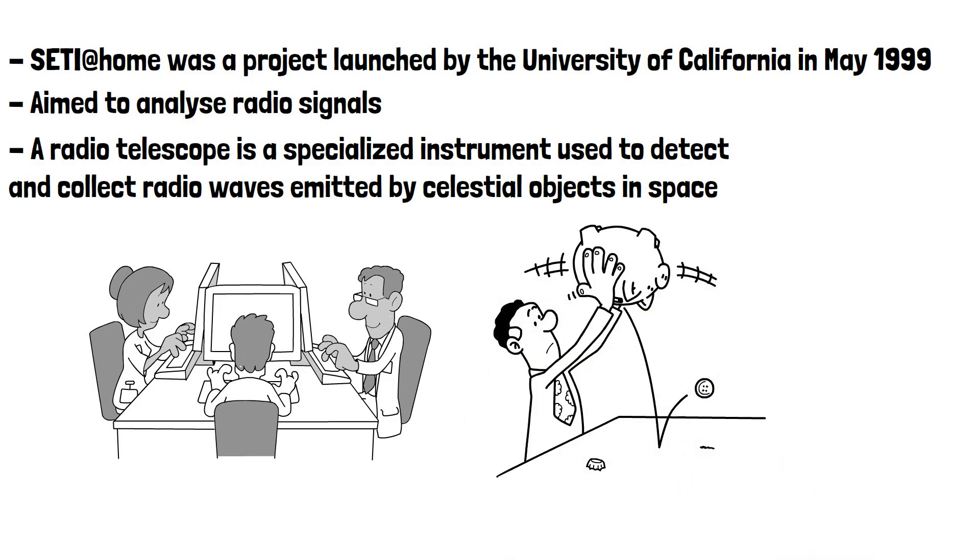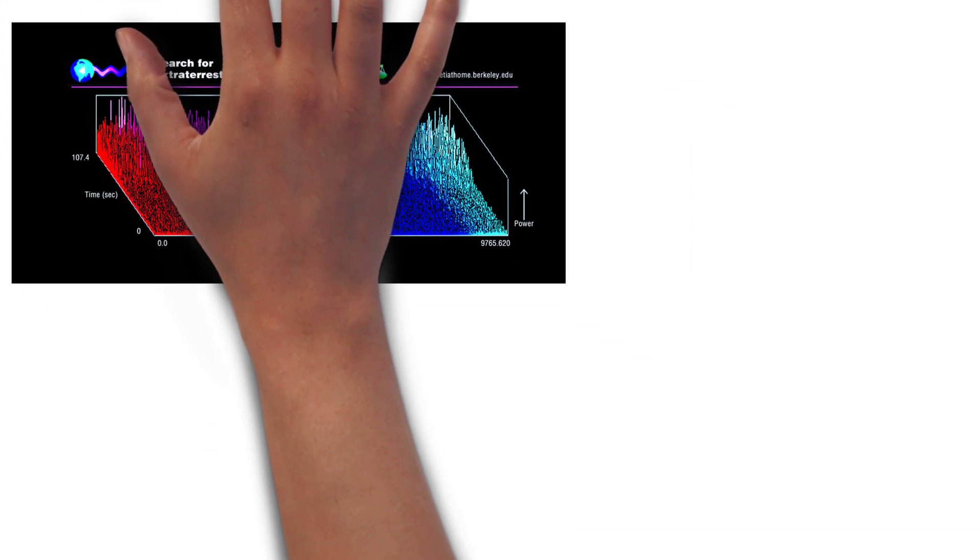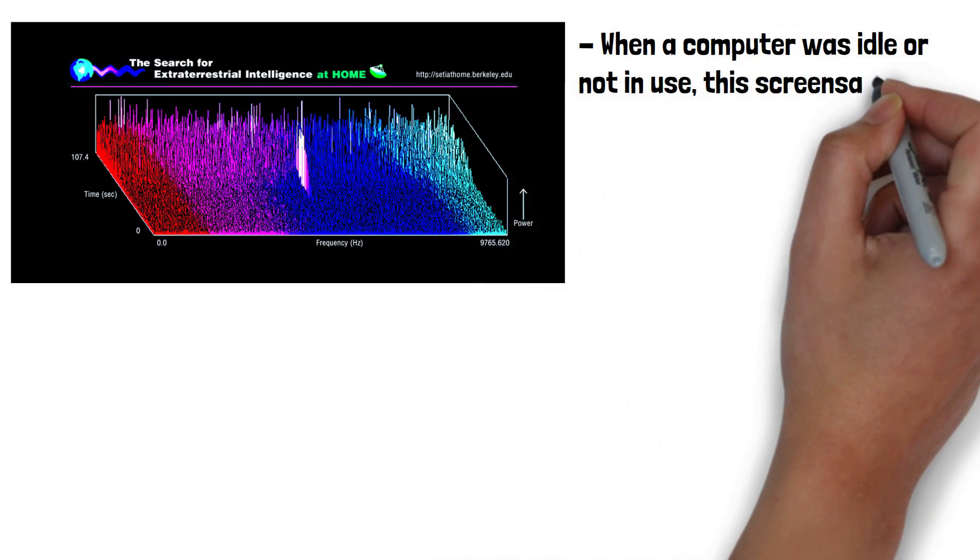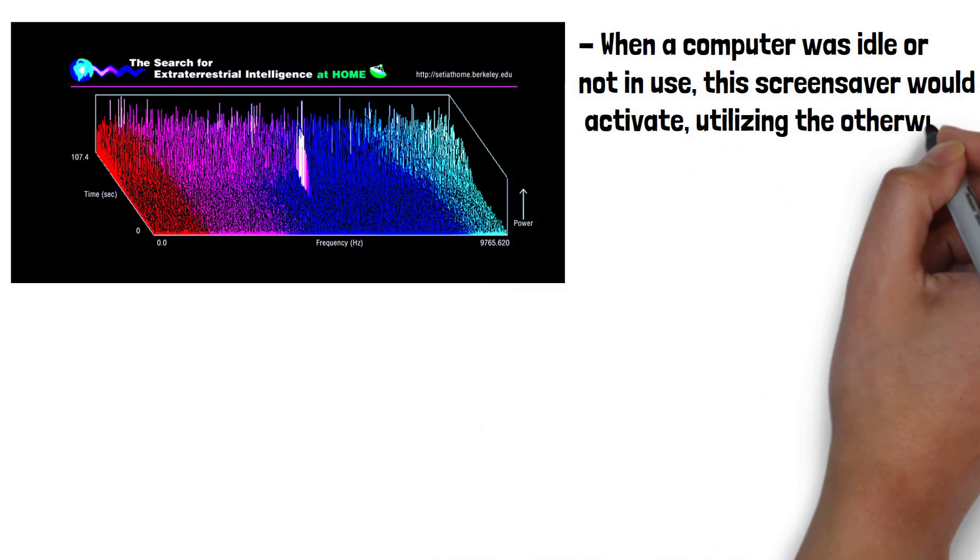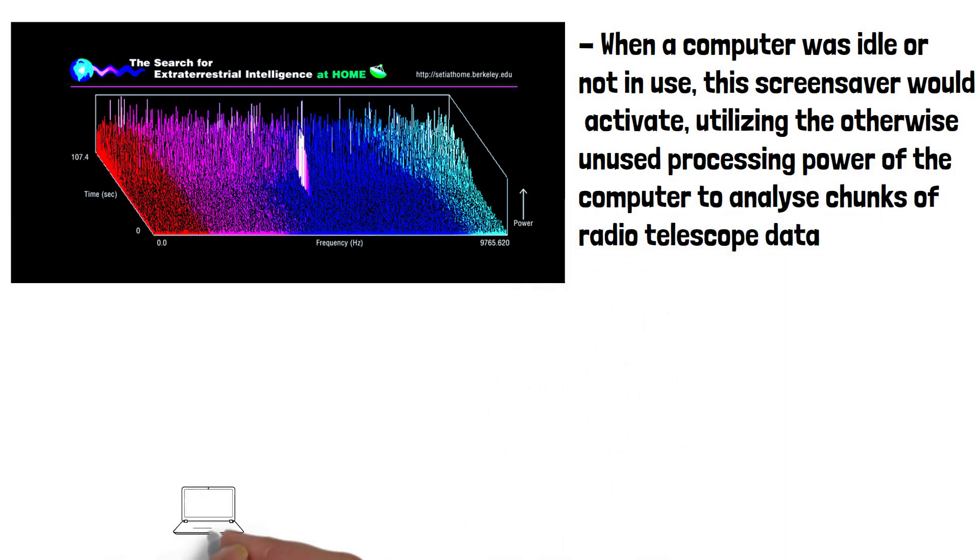That's where the SETI at home project comes in. SETI at home distributed a screensaver programme that volunteers could download and install on their personal computers. When a computer was idle or not in use, this screensaver would activate, utilising the otherwise unused processing power of the computer to analyse chunks of radio telescope data.